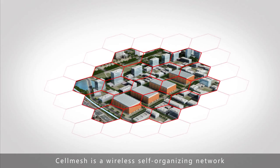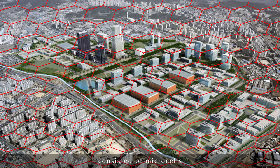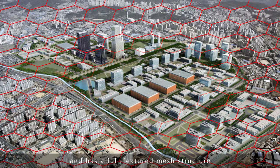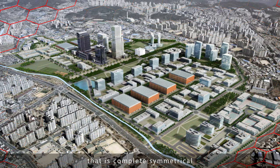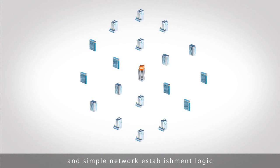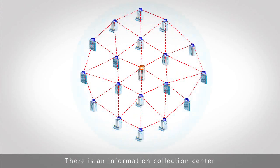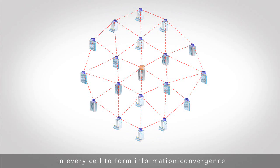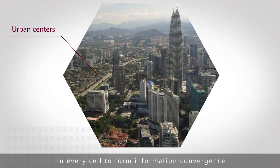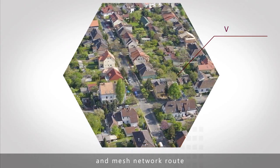CELL MESH is a wireless self-organizing network consisting of microcells. It carries a very strong derivative characteristic and has a full-featured mesh structure that is completely symmetrical. CELL MESH has diverse structure, distinctive hierarchy, and simple network establishment logic. There is an information collection center in every cell to form information convergence by utilizing point-to-multipoint routes and mesh network routes.